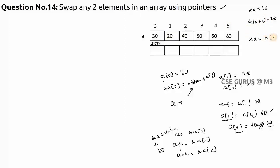We can conclude that *a equals a[0] and *(a+1) equals a[1]. So to swap, instead of writing a[1] we can write *(a+1), and instead of a[4] we can write *(a+4). Using these pointer expressions, we can swap any two elements using pointers. Let's look at the code.